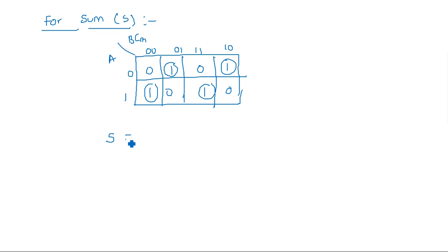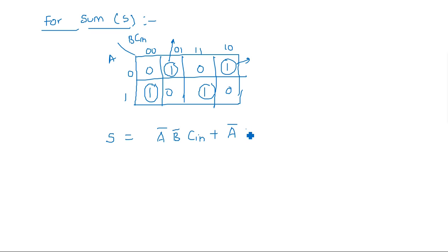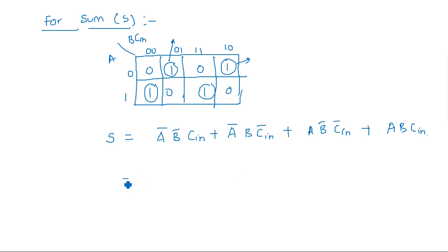Since there is no mapping between two successive ones, the expression for Sum is: S = A̅B̅Cin + A̅BCin̅ + AB̅Cin̅ + ABCin. These four min terms correspond to the four individual 1s in the K-map.